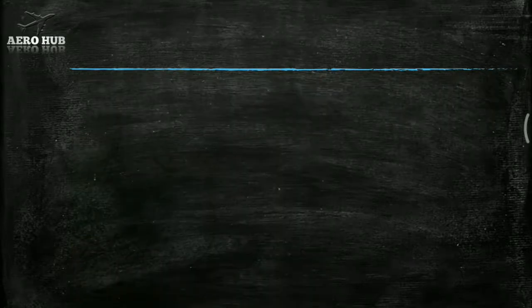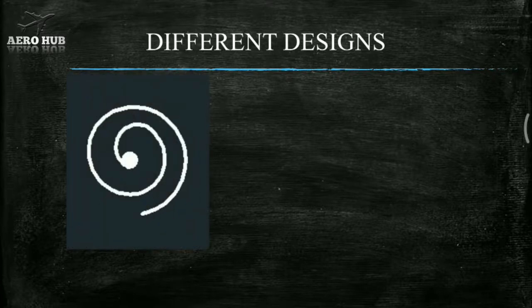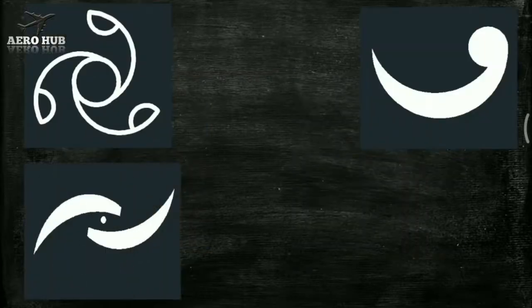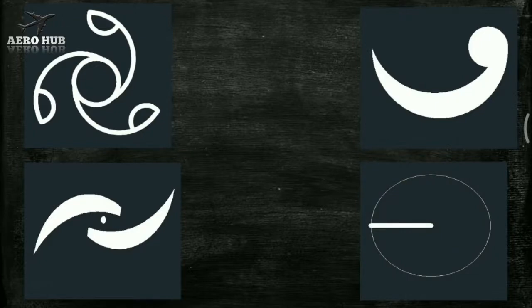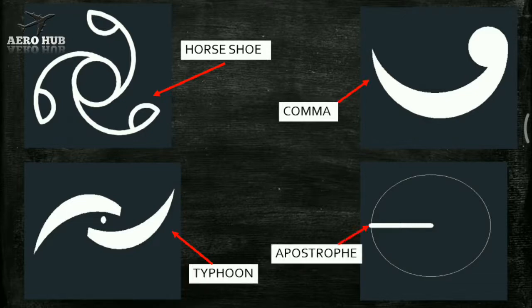Now let's see the different designs used as spirals. The first one is called spiral. The second one is called G-swirl. These two are the most common designs used in most jet engines. The third one is called horseshoe. The fourth one is called comma. The fifth one is called typhoon or hurricane. The sixth one is called apostrophe. The seventh one is called wobble ball. And the last one is called wobble crescent.